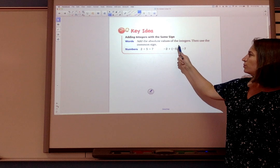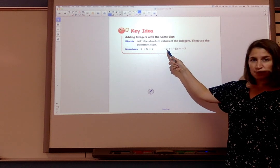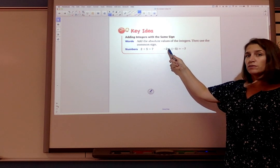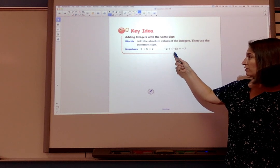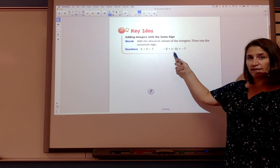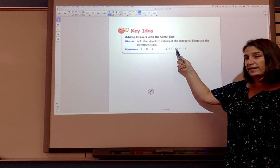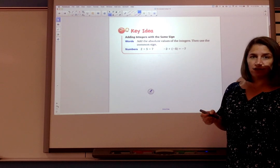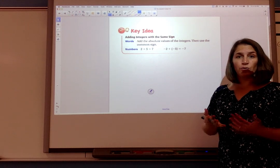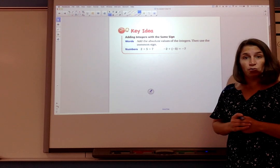That's 2 + 5 which is 7 and since both numbers are positive it's positive. Here we have -2 + (-5). The absolute value of -2 is 2. The absolute value of -5 is 5. We add 2 + 5 to get 7 but since both integers are negative it's -7. So that's one way to write down the rule but you wrote down your own way as well.